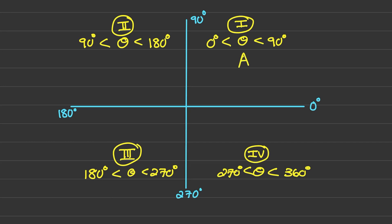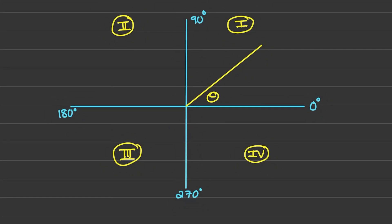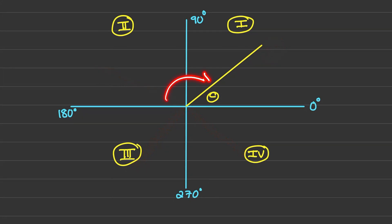You also know that every trig ratio is positive in quadrant one, that only sine is positive in quadrant two, that tan is positive in quadrant three, and that cosine is positive in quadrant four. What we want to do with the reduction formula is reduce any angle in any quadrant to the first quadrant.